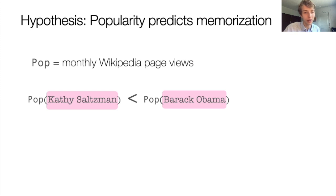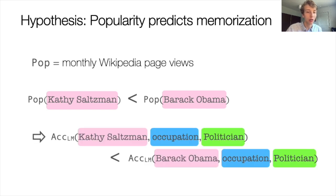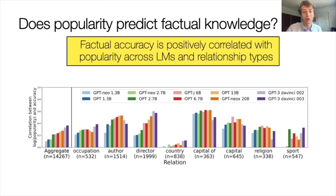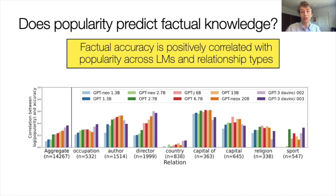Crucially for our analysis, each question is tied to a subject entity popularity, which has not been considered in prior analysis. Popularity of an entity is defined as the number of monthly page views of its Wikipedia page. Our hypothesis is that factual knowledge about popular entities can be more easily memorized than factual knowledge about less popular entities. So in this example, a knowledge triple about Kathy Saltzman is less likely to be memorized than one about Barack Obama. And it turns out that yes, factual accuracy is predicted by popularity. This chart shows that the Pearson correlation between accuracy and log popularity of the subject entity is positive for a wide range of models and relationship types.